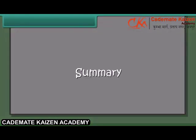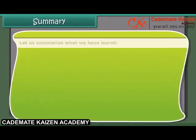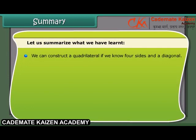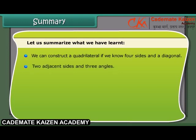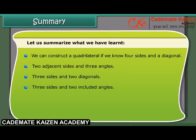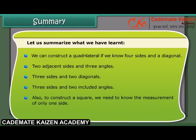Summary: We can construct a quadrilateral if we know 4 sides and a diagonal, 2 adjacent sides and 3 angles, 3 sides and 2 diagonals, or 3 sides and 2 included angles. Also, to construct a square, we need to know the measurement of only one side.